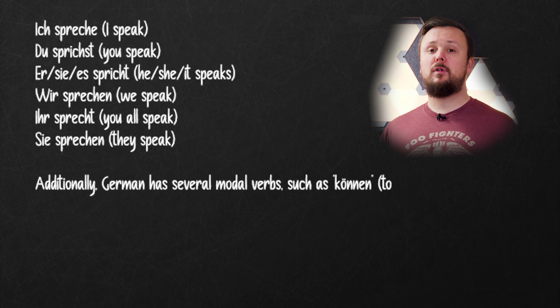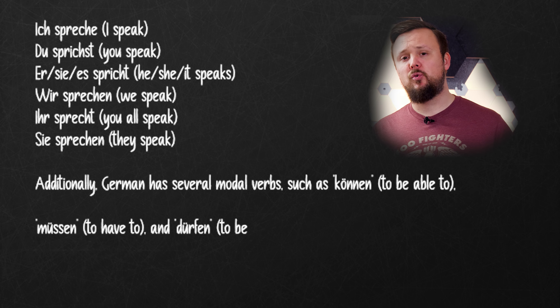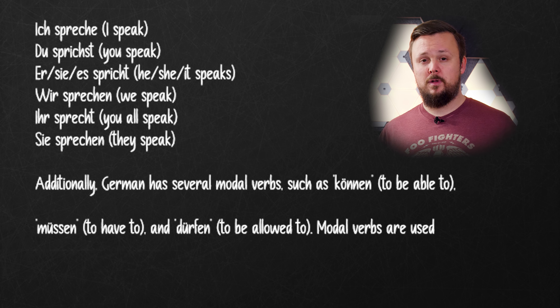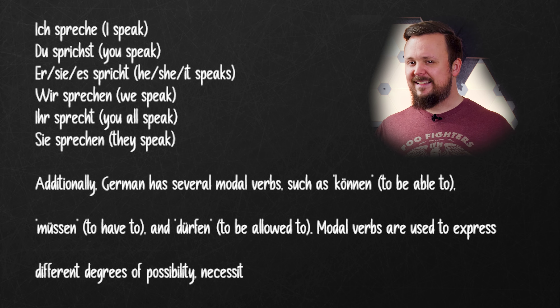Additionally, German has several modal verbs such as können (to be able to), müssen (to have to), and dürfen (to be allowed to). Modal verbs are used to express different degrees of possibility, necessity, or permission, and they have their own unique conjugation patterns. Overall, learning German verbs can be a daunting task, but it is an essential part of mastering the language. By practicing regularly and familiarizing yourself with the different tenses, moods, and conjugation patterns, you will become more comfortable with using German verbs in everyday language.